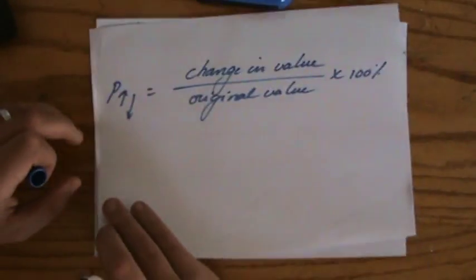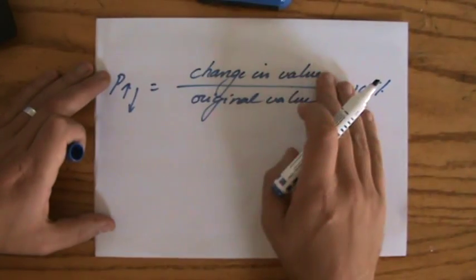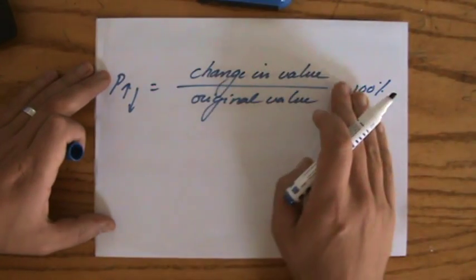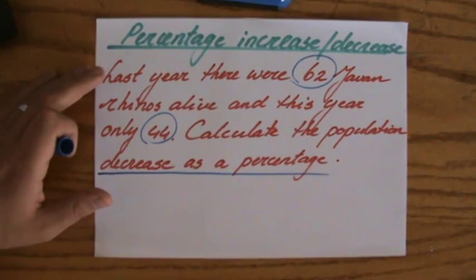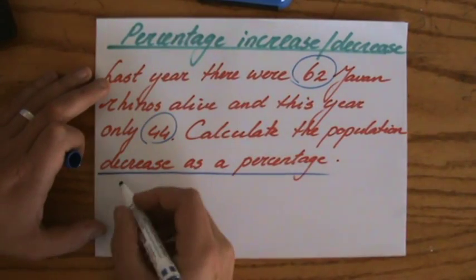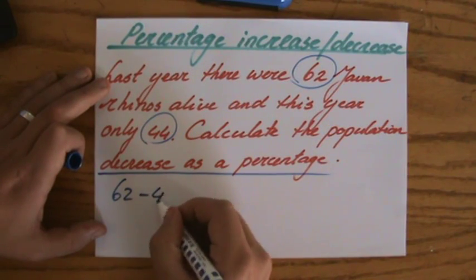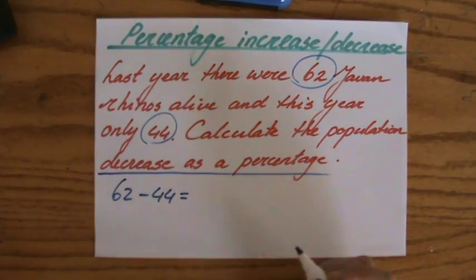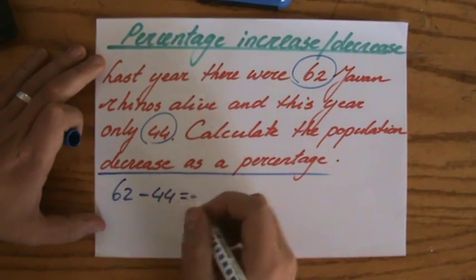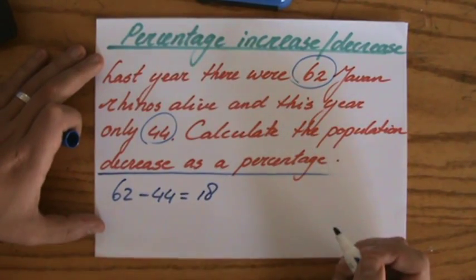Let me get that sheet for you. The change in the value over the original value times it by 100 percent. So what is the change in value? Well, there were 62 and I'm going to take away 44. So the change in value is 18.